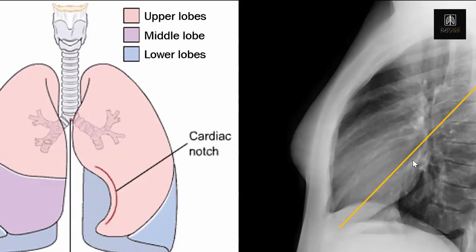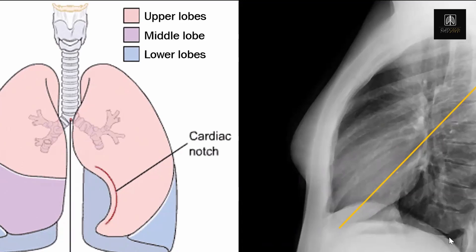The upper lobe goes down quite far and the lower lobe comes up quite far too. The upper lobe, the lingula on the left, and the right middle lobe border the heart because the heart is an anterior structure, and the lower lobes have large contact with the diaphragm. That's an important finding especially when we want to localize things.